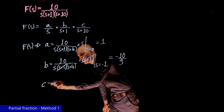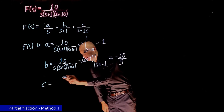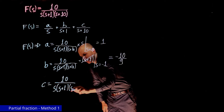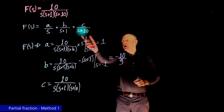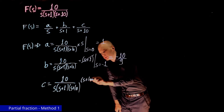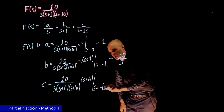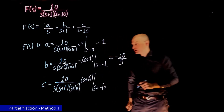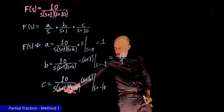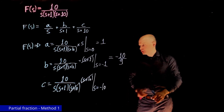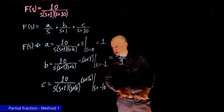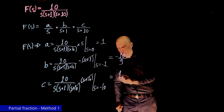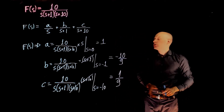For c, take 10 over s(s+1)(s+10), multiply by (s+10), and set s to negative 10. Cancelling the (s+10) terms, we have 10 divided by (negative 10)(negative 10 + 1) = 10 divided by (negative 10)(negative 9). Negative 1 divided by negative 9 gives c = 1/9.